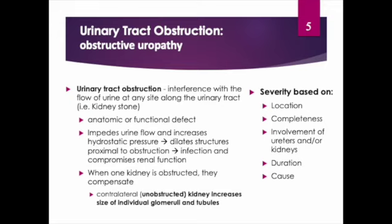Obstructions can be relieved or at least partially alleviated with correction of the obstruction, though permanent impairment can develop with a complete or partial obstruction that persists over weeks to months. When one kidney is obstructed, the other kidney is able to compensate. The contralateral or unobstructed kidney will increase in size, especially in the individual glomeruli and tubules, as it compensates for the obstructed kidney.